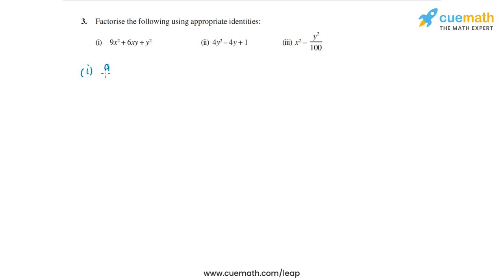The first expression is 9x square plus 6xy plus y square. Now let's observe that 9x square is the square of 3x and y square is the square of y, and 6xy can actually be thought of as 2 times 3x times y.